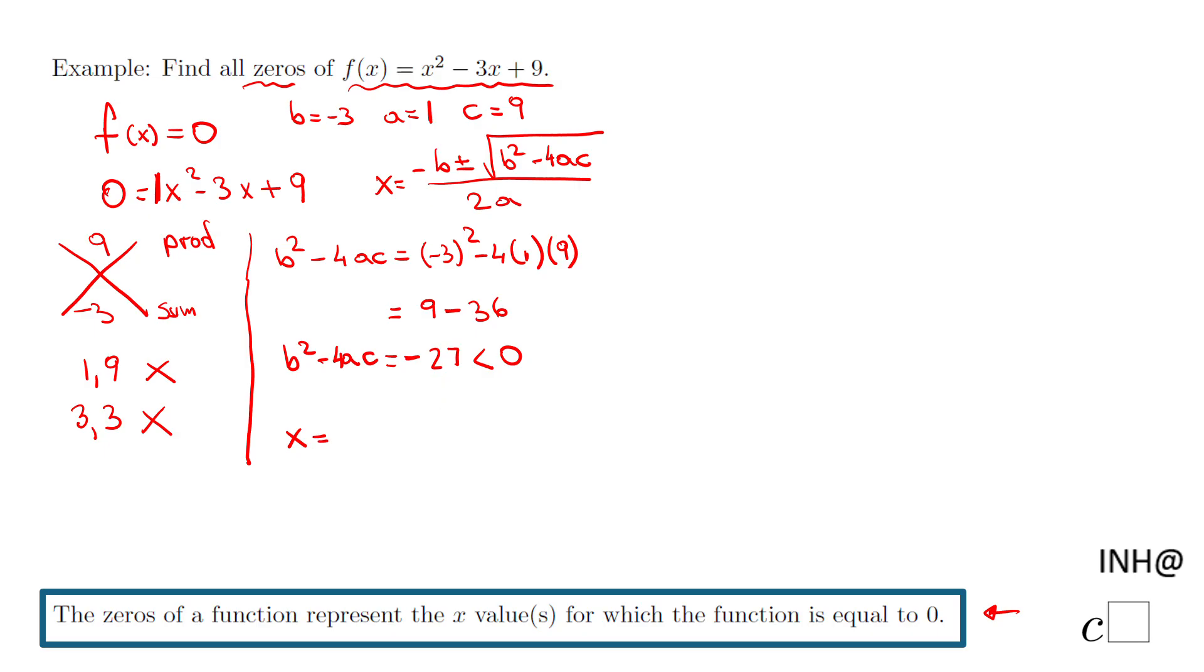x equals, we're going back to the quadratic formula, negative b is going to be negative negative 3, plus or minus square root of -27 over 2a, 2 × 1. Let's take a look. What can we simplify here? We have positive 3, plus or minus.